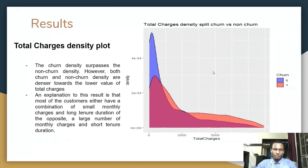This plot is the total charges density plot. We can see that the churn density actually surpasses the non-churn density. However, both churn and non-churn density are tending towards the lower value total charges. An explanation to this result is that most of the customers either have a combination of small monthly charges and long-tenure duration or the opposite, a large number of monthly charges and a short-tenure duration.